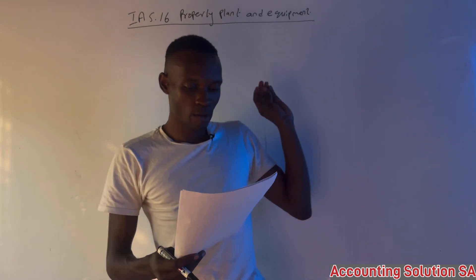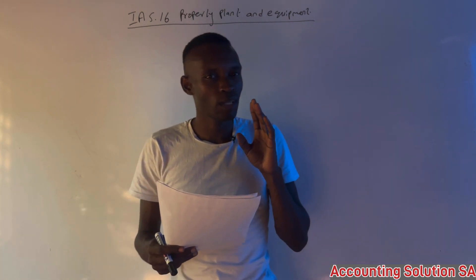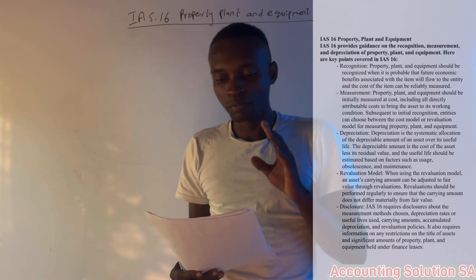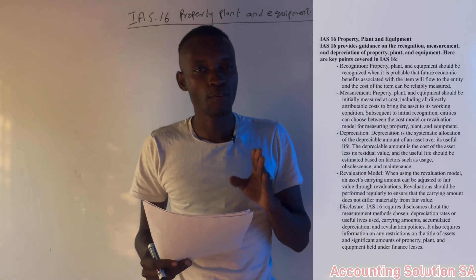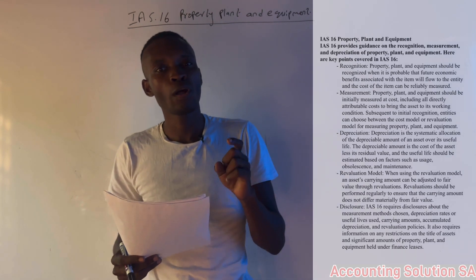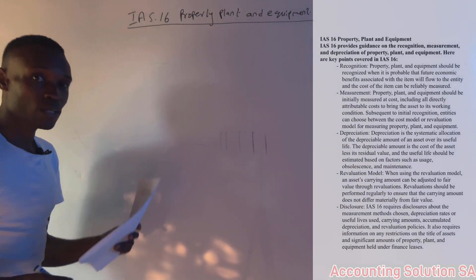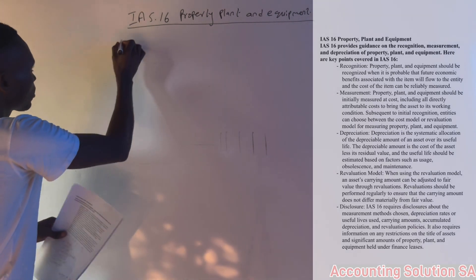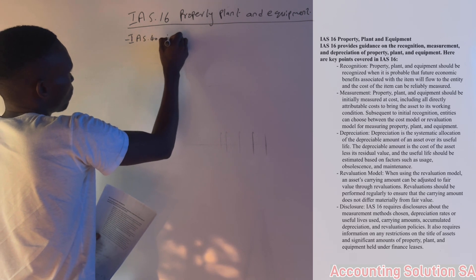I did a short summary which is going to appear on the screen. I want to make an important note about this standard. Number one, what you have to know is that this standard deals with property, plant and equipment. You must be able to know whether an item is treated under IAS 16 or under IAS 40 — IAS 40 being investment property.